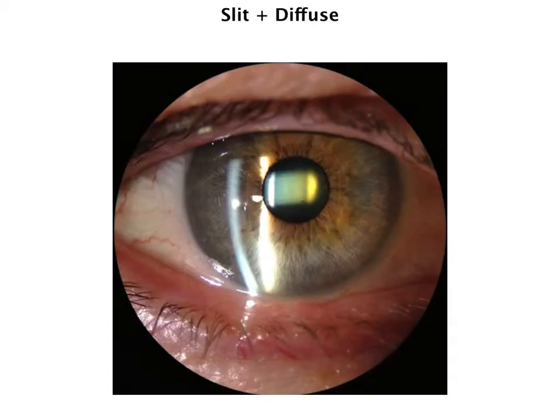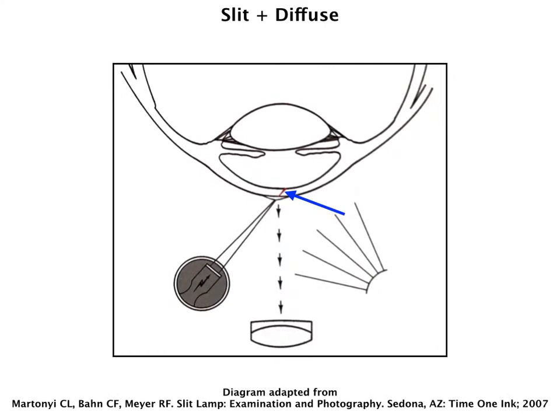If we look at the same photograph but now add just a little bit of diffuse light, we see that it kind of improves the overall quality — not just of the background, but also of the specific pathology that we're looking at, which in this case is the vacuoles. You can either put the diffuse light on the opposite side of the slit beam, or you could put it on the same side. One of the benefits of having it on the opposite side is it gives a little bit more even illumination.